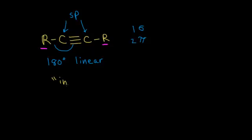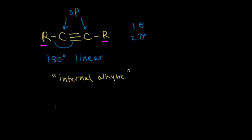So it's an internal alkyne, which just means that the triple bond is found in the interior of the molecule, in the interior of the chain. The triple bond is not found on the end. So that's an internal alkyne, which is different from a terminal alkyne.